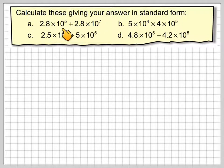We've got 2.8 times 10 to the 5 plus 2.8 times 10 to the 7. 5 times 10 to the 4 times 4 times 10 to the 5. 2.5 times 10 to the 4 plus 5 times 10 to the 5. And 4.8 times 10 to the 5 minus 4.2 times 10 to the 5.